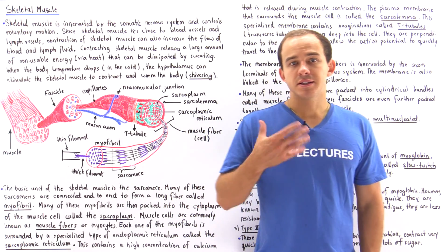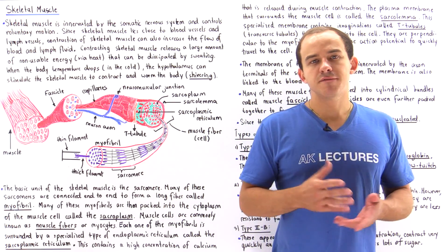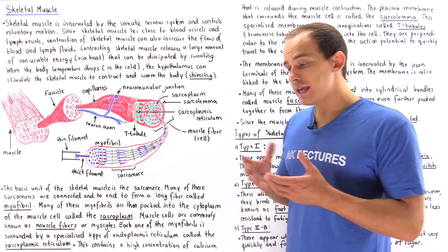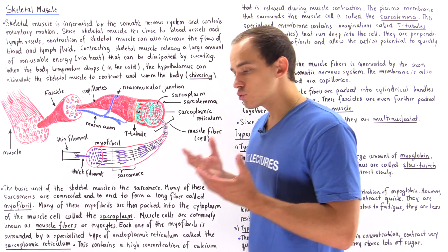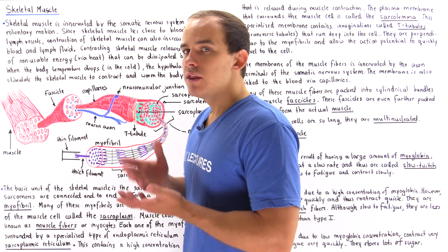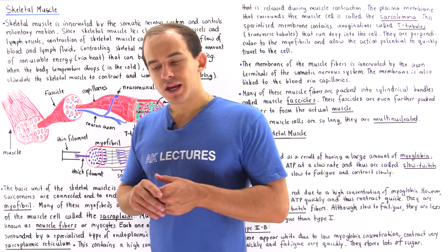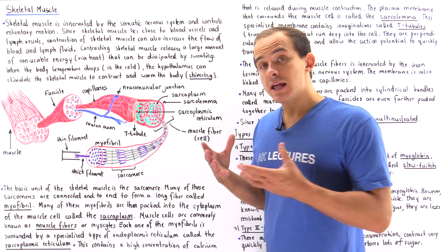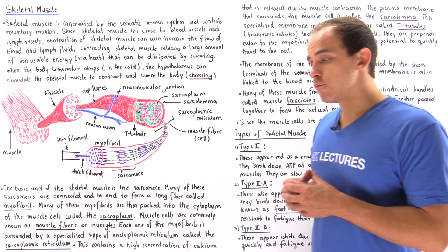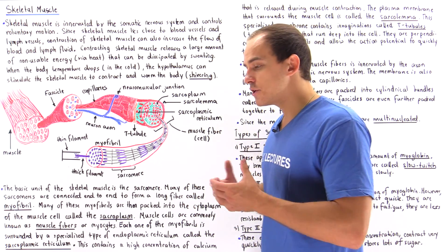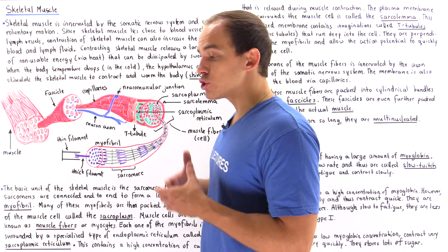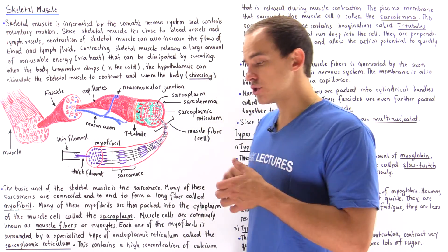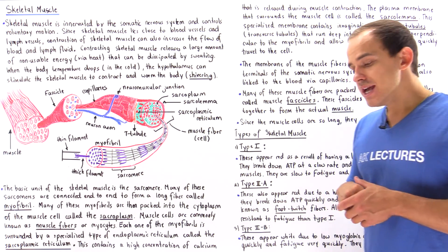Skeletal muscle is a type of muscle found in the human body. Skeletal muscle is innervated — controlled by the somatic nervous system. That basically means skeletal muscle is responsible for voluntary motions such as walking or running, motion that we are consciously in control of.